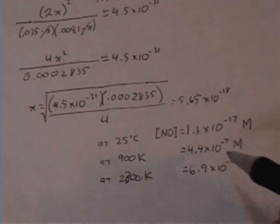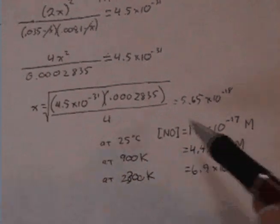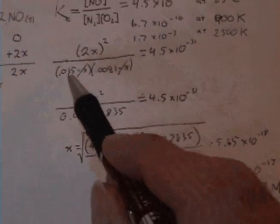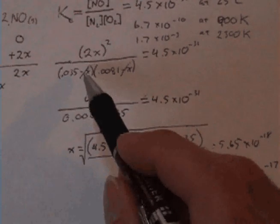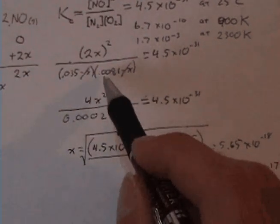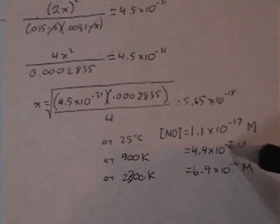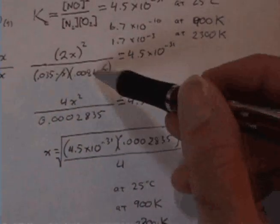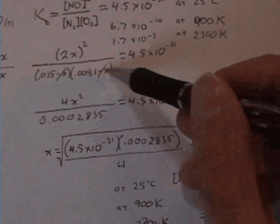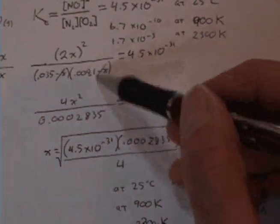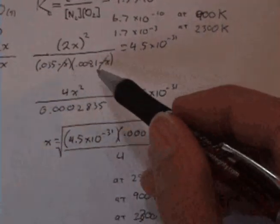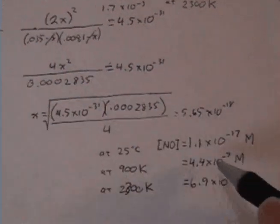But we do need to verify our assumption. We assumed that x would be negligible in comparison to these values. And here times 10 to the minus 7th—well that's still, you know, several places out here. We only have four decimal places, so we're good there, we're good there, we're good there.